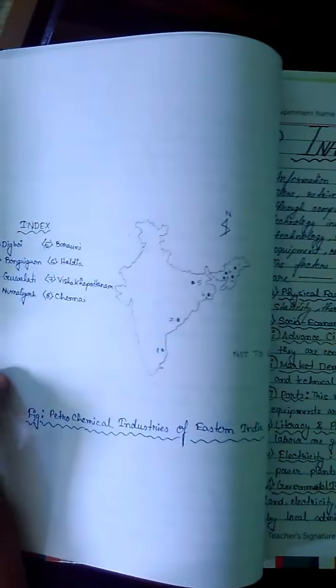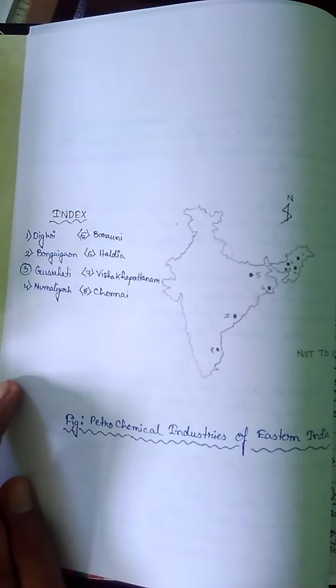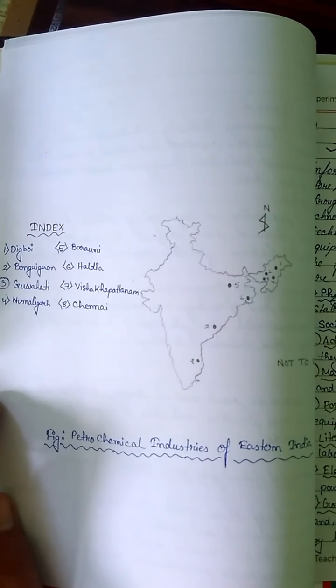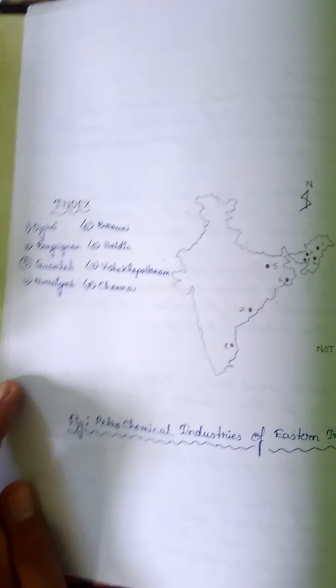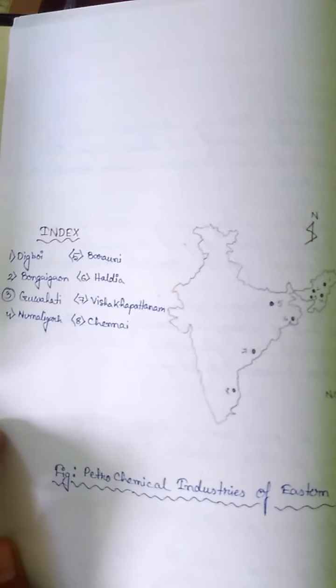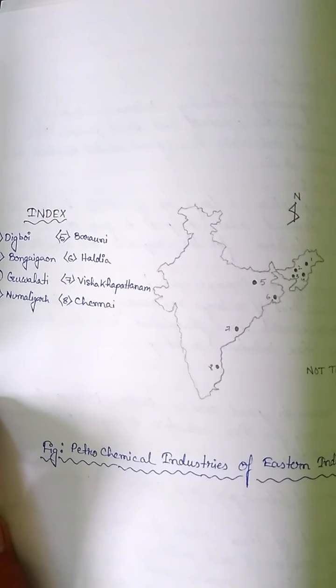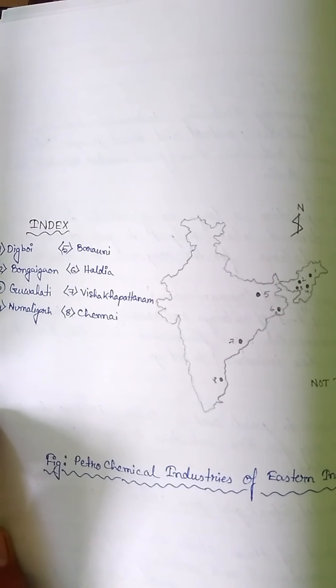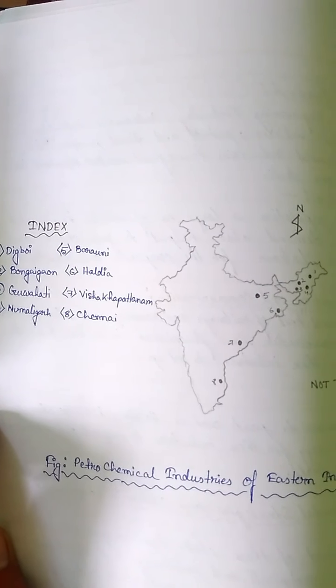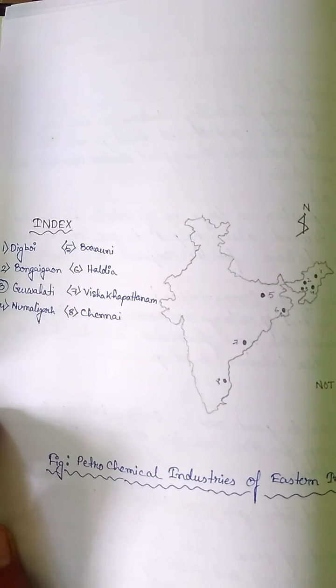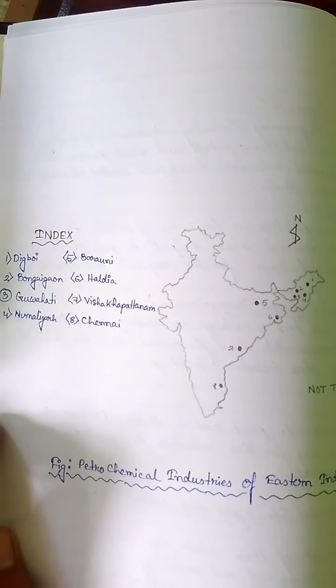A map shows the petrochemical industries of Eastern India. The centers are: Digboi, Bongaigaon, Guwahati, Numaligarh, Barauni, Haldia, Visakhapatnam, and Chennai, with numbers provided to identify each location.